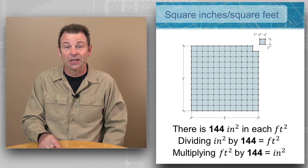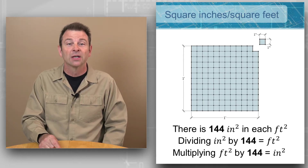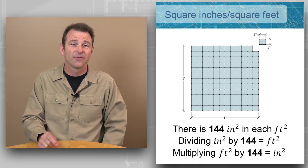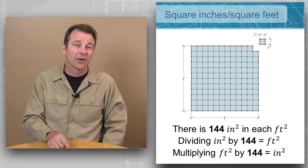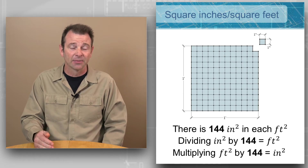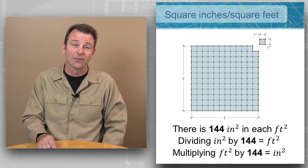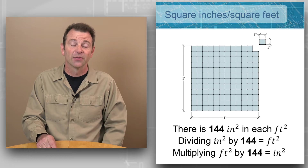That number is what I mentioned before: 144. Just like our feet and 12 inches in each foot for linear measurements, there are 144 square inches in every square foot. It's important to remember this number.